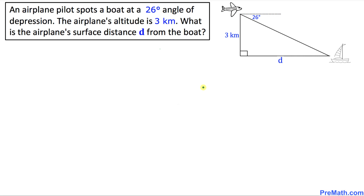Welcome to PreMath. In this video tutorial our topic is applications in trigonometry, and here you can see a word problem along with this visual representation. Let's go ahead and read this word problem: An airplane pilot spots a boat at a 26 degree angle of depression. The pilot's altitude is 3 kilometers. What is the airplane's surface distance d from the boat?